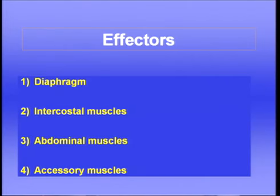Now let's move to the effectors, which are the muscles of respiration. We looked at these in detail in the session on ventilation, but just to recap: the most important muscle of inspiration is the diaphragm, which is supplied by the phrenic nerves originating high in the cervical region of the spinal cord. So damage to the spinal cord in the thoracic region spares the phrenic nerves, and therefore breathing can continue — that's very important in the survival of people who develop this kind of injury.